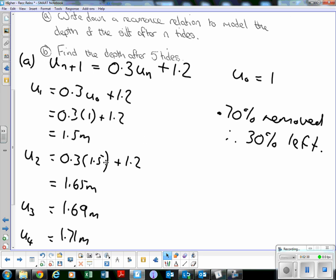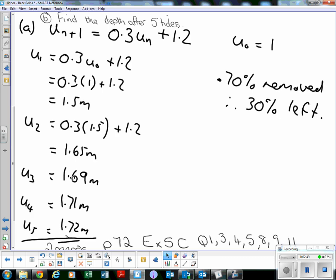So u_2 will be 0.3 times u_1, which is 1.5, plus 1.2, giving us 1.65 meters. Then just repeating that for u_3, u_4, and u_5, we get u_5 to be 1.72 meters.